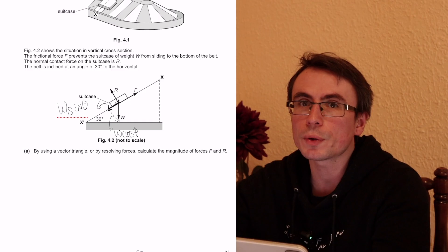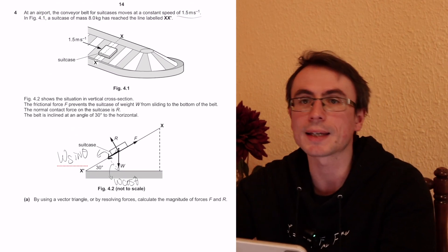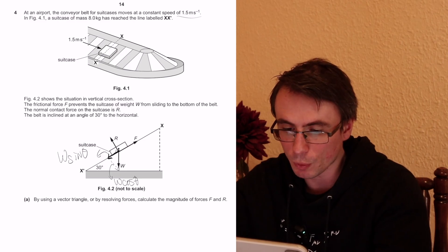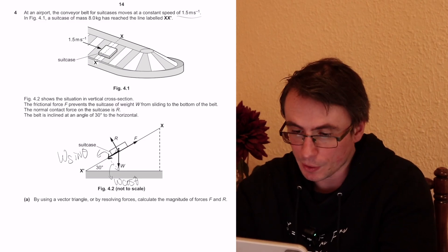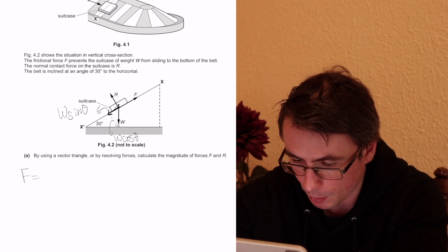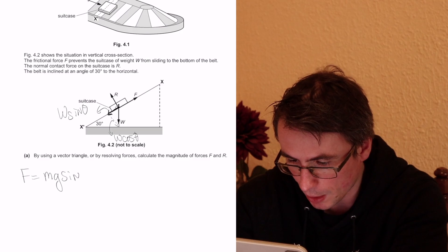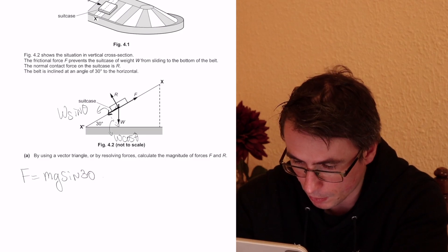So in order for this object to be moving at a constant speed as said in the actual question, then all the forces must be balanced. So this means that F will have to be equal to w which is mg sine of theta, which is 30 degrees.